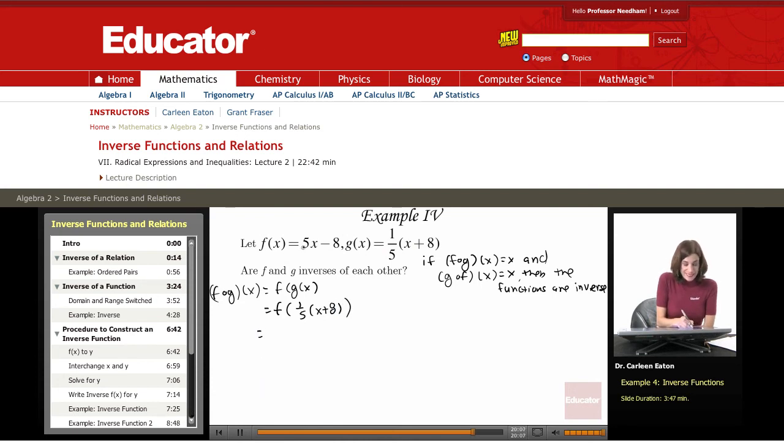f of x is 5x - 8. So f of this expression would be 5 times [(1/5)x + 8] - 8. Let's get rid of these parentheses and do some multiplying.